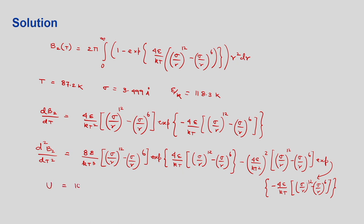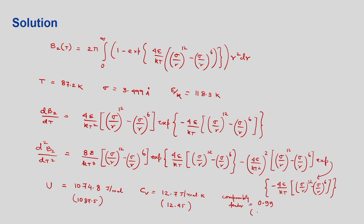Substituting all values, the results are: internal energy U ≈ −1074.8 J/mol, heat capacity C_V ≈ 12.7 J/(mol·K), and compressibility factor Z ≈ 0.99. Comparing with ideal gas values of U ≈ −1087.5 J/mol, C_V ≈ 12.47 J/(mol·K), and Z = 1, the internal energy decreased, C_V increased due to additional degrees of freedom, and compressibility is slightly lowered due to non-ideal conditions.